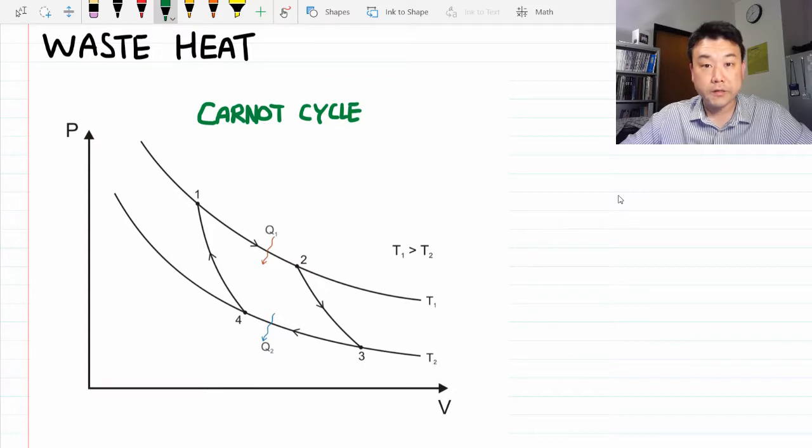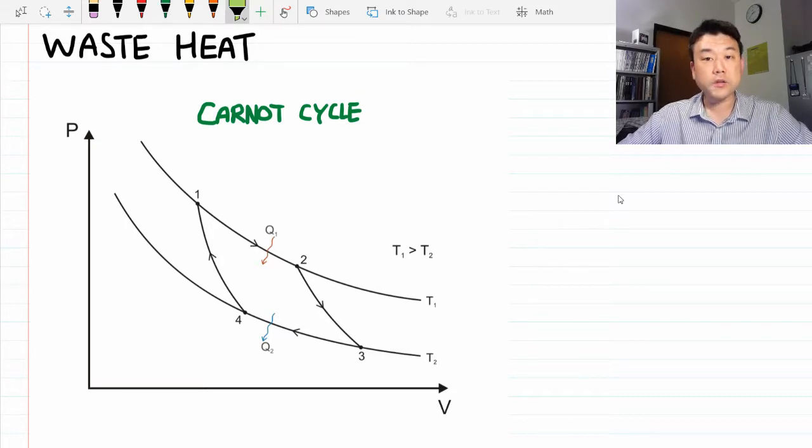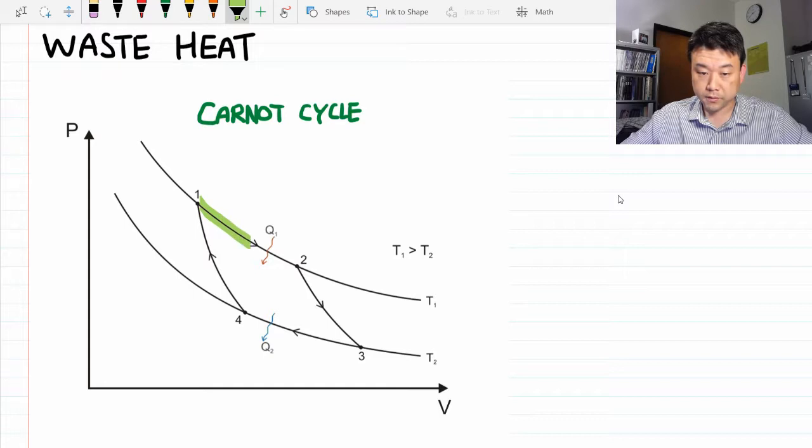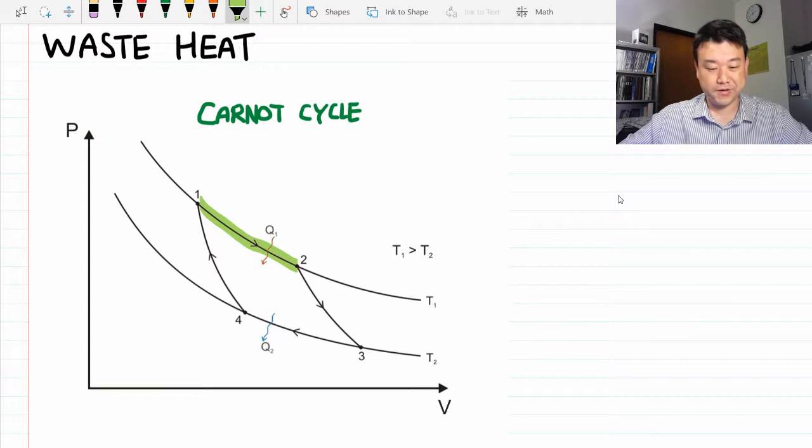It's to reverse the much more natural process of work turning into heat through friction. So, when you look at the Carnot heat engine cycle through that lens, the only part of the process you want is here, from 1 to 2, except that would be a very wasteful engine.